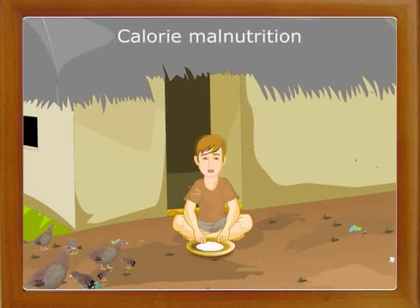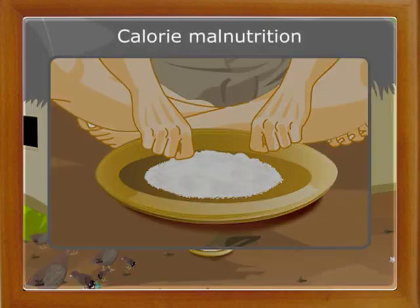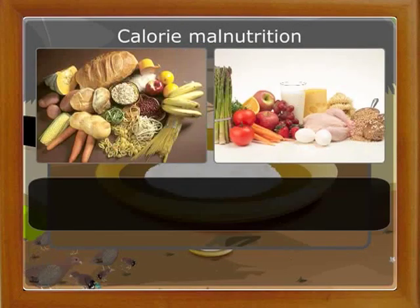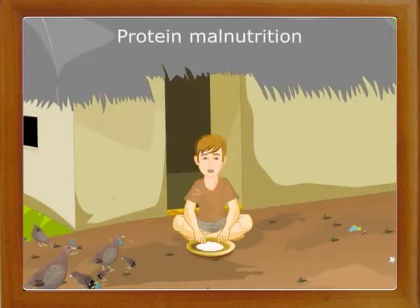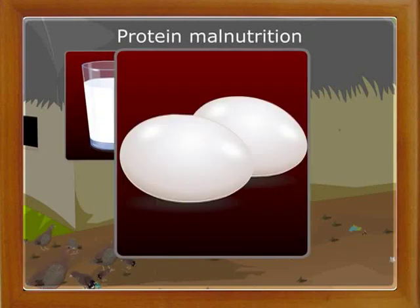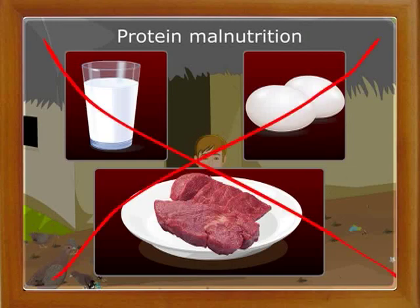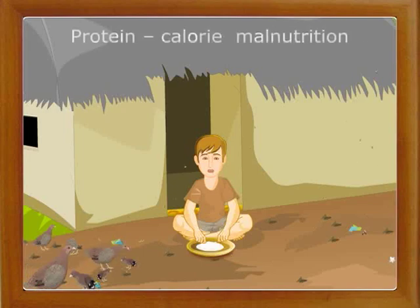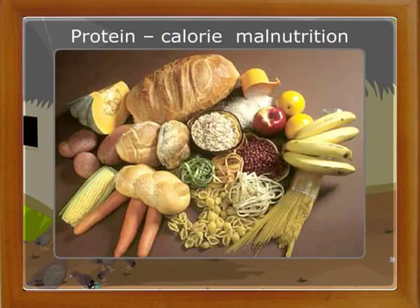Malnutrition in children is broadly classified into three types. First, calorie malnutrition — seen in children given insufficient amounts of energy-providing nutrients such as carbohydrates and fats, also called energy malnutrition. Second, protein malnutrition — where children are given diets with insufficient proteins or proteins containing lesser amounts of essential amino acids. Third, protein-calorie malnutrition — seen in children given poor quality food with inadequate energy-providing carbohydrates and proteins.